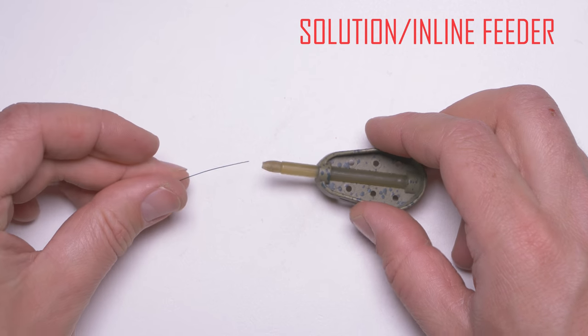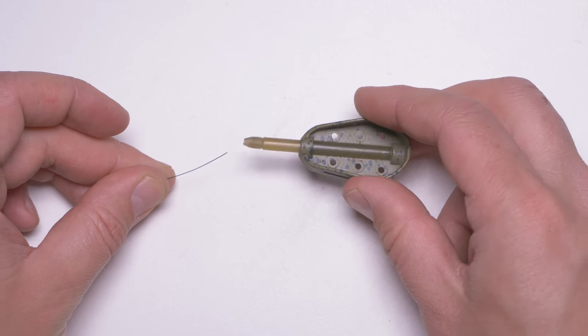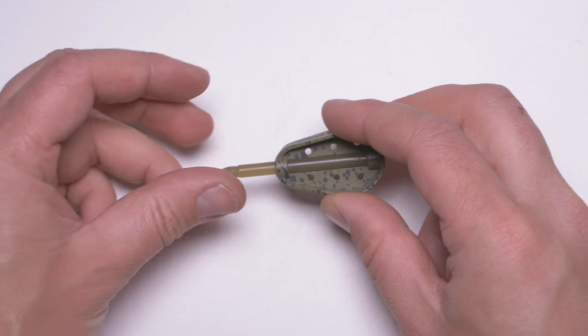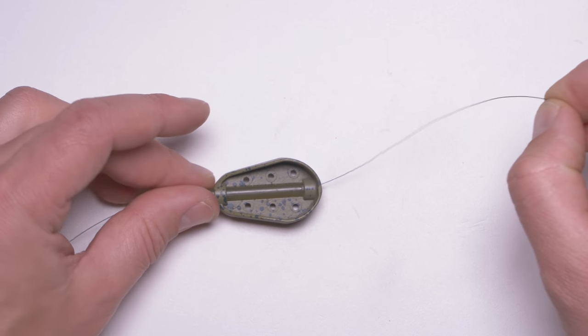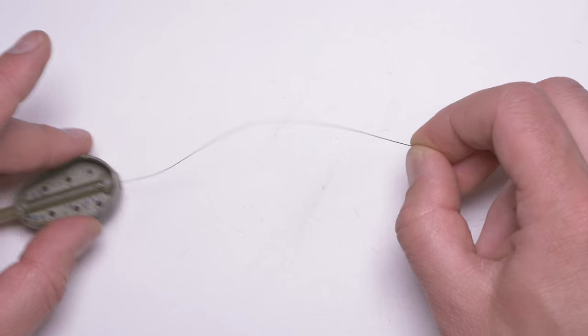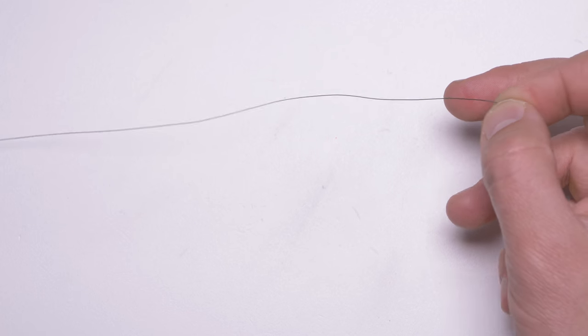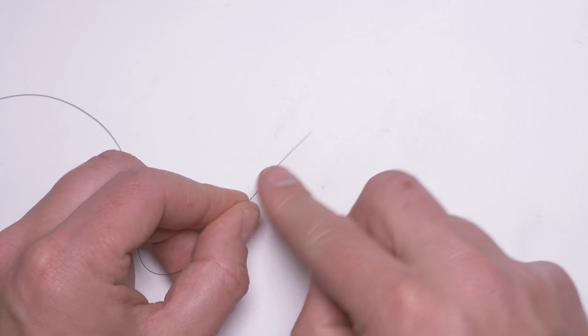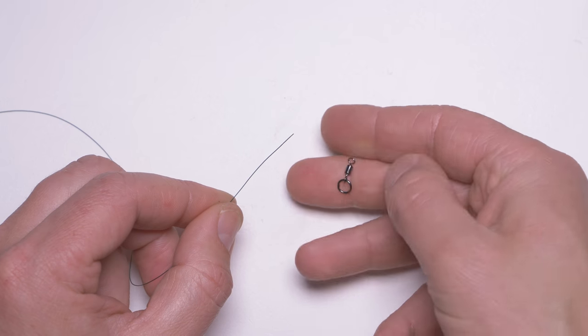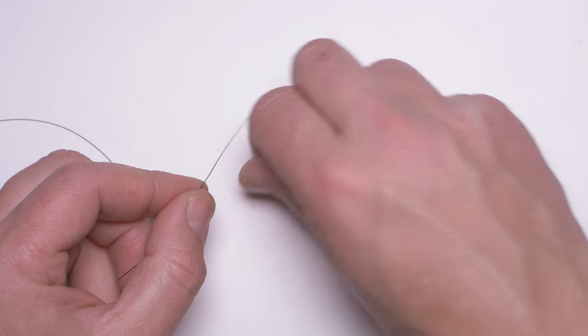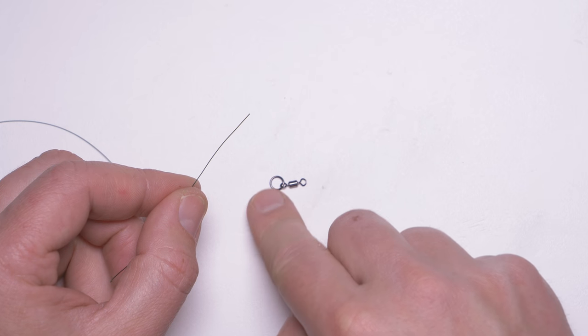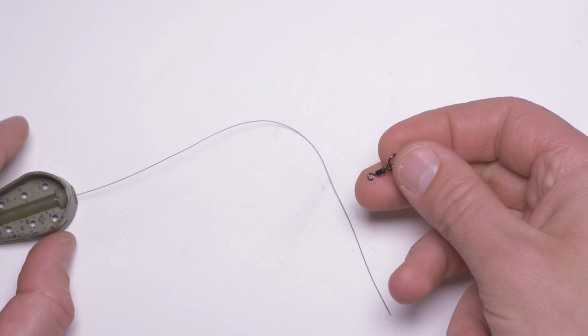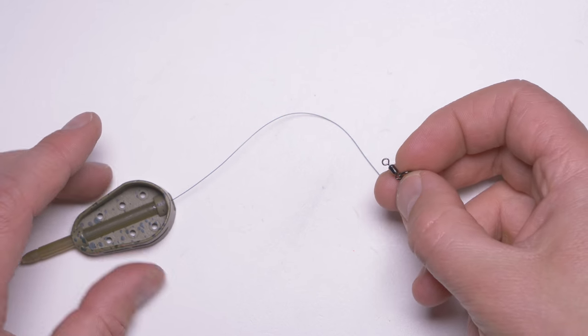The steps are more or less the same, at least at the start. I will grab my feeder and slide it onto my mainline just like that. Then I will put my feeder aside for a bit. On the end of my mainline I will attach a swivel which has a very big ring in it. But before attaching my swivel to the line, I have to make sure that my swivel goes well inside the feeder.